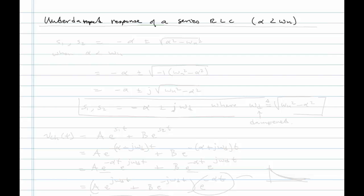We're now ready for working through the solution — the homogeneous and ultimately the complete response for an underdamped series RLC. That is the case where alpha is less than omega_n.